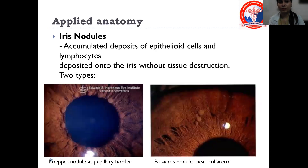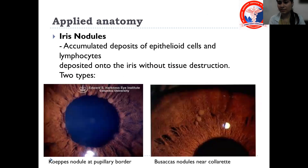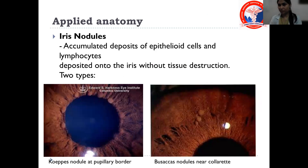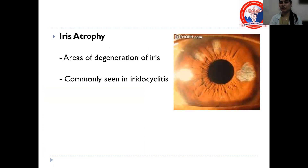So these are a few iris features which we have studied. We have covered the main function of the iris, its anatomy, basic microscopic structure, and the applied anatomy. In the next lecture, we are going to discuss the ciliary body and the choroid and their clinical applications. Thank you.